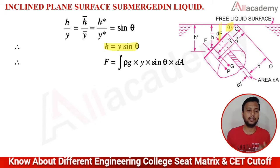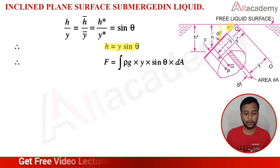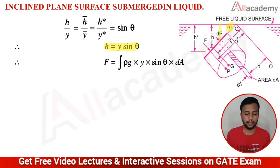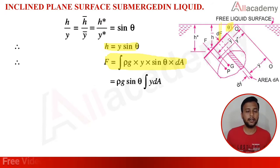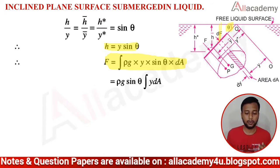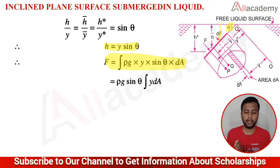Substituting H as Y sin θ, the equation becomes F = ∫ρg Y sin θ dA. Taking ρg and sin θ outside the integral, the remaining term is ∫Y dA, where Y is the distance of the elemental strip from the O-O axis and dA is the elemental area.